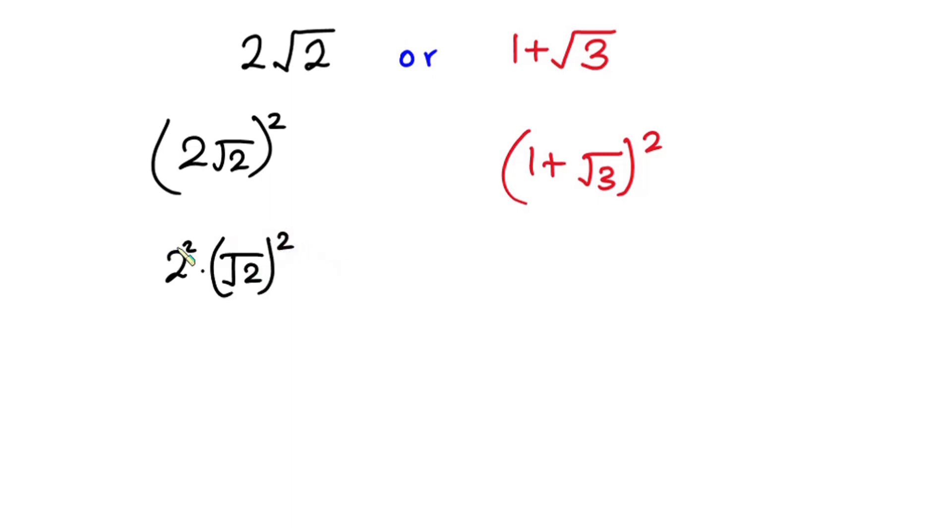So simplifying this, we have 4 times 2, since the square will cancel the square root. So this part is equal to 8.